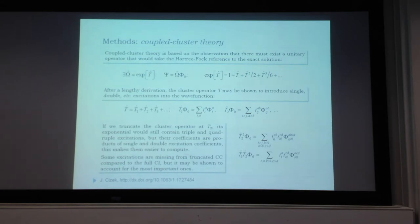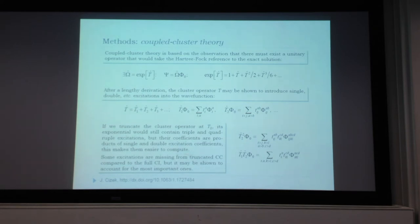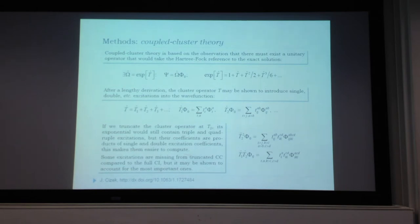When we take the exponential of T, we get all possible excitations with the correct coefficients. Coupled cluster theory truncates T at single and double excitations, for example. Taking the exponential gives powers—single excitations of single excitations, single excitations of double excitations—but never direct quadruple excitations. Because electronic interactions are all pairwise, this captures the essential variational space, as two-particle correlations are more important than direct four-particle correlations.